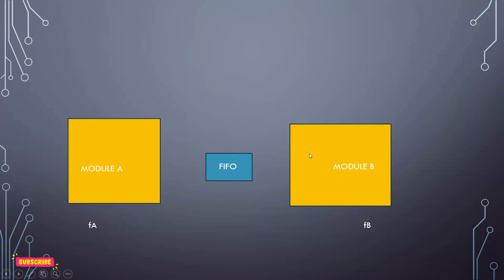There are different scenarios: module A working at a higher frequency than module B, module B working at a higher frequency than module A, or both working at the same frequency. Module B is considered the reading module and module A the writing module. We need to find the FIFO depth for each scenario so that we are not going to lose any data.